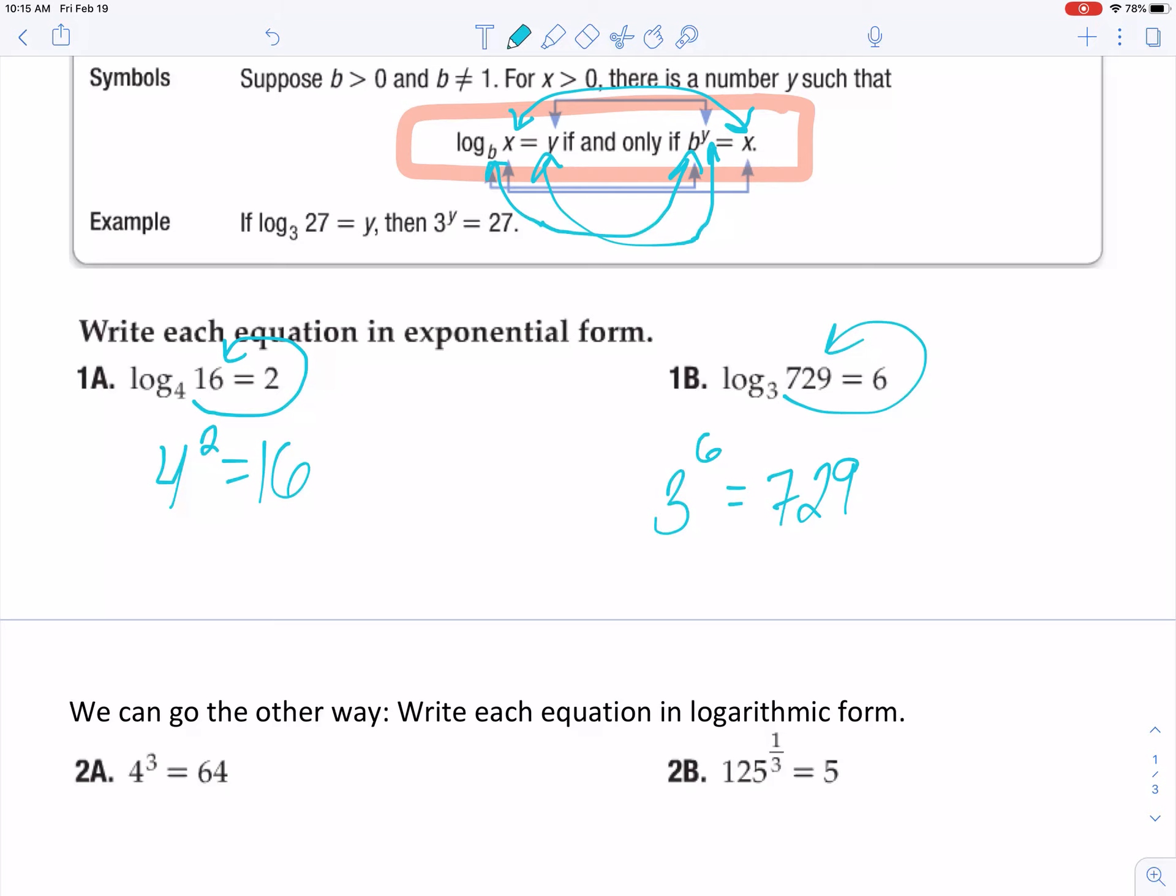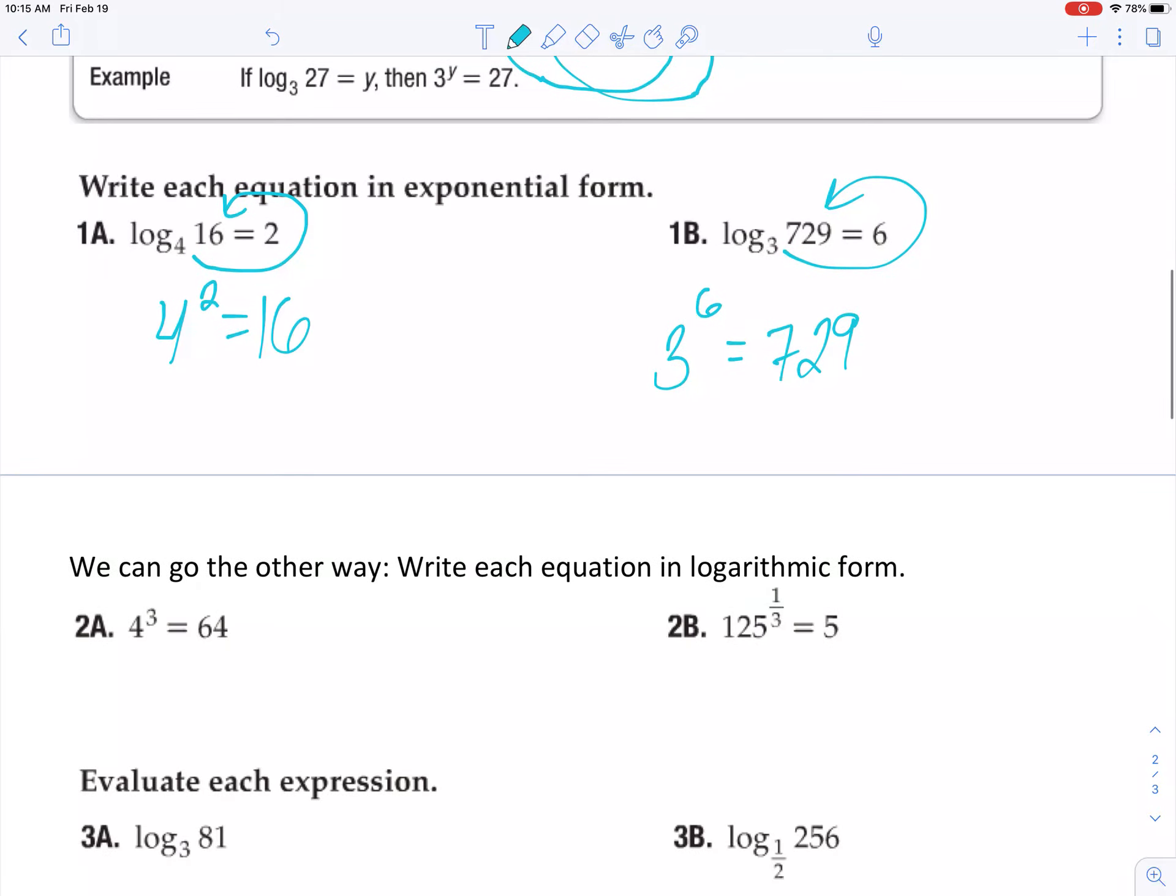And we can go the other way. If they give me it already in exponential form, I can write it in logarithmic form. The circle method works great. I'm just going to do log base 4 of 64. So I have 4, I want to use an exponent to get 64. What exponent is that? 3.